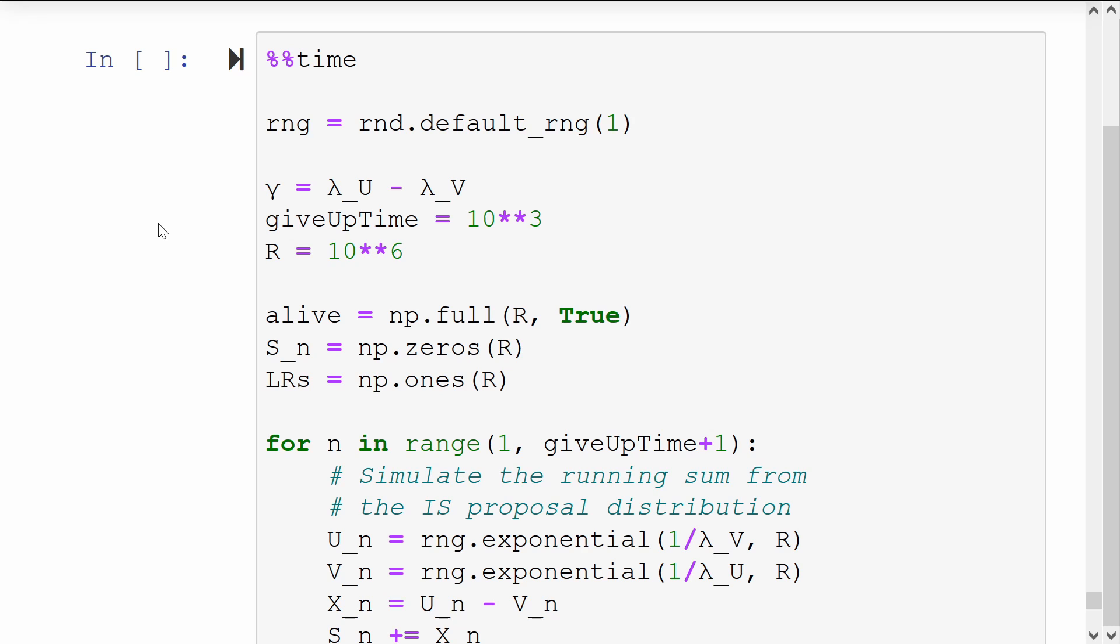So the code here is quite similar to what we had before. Start off with a random number generator, calculate this tilting parameter gamma. We will still tell Python to stop simulating after a certain number of claims, because this is just general good practice to avoid writing while loops that may run forever due to some small programming bug.